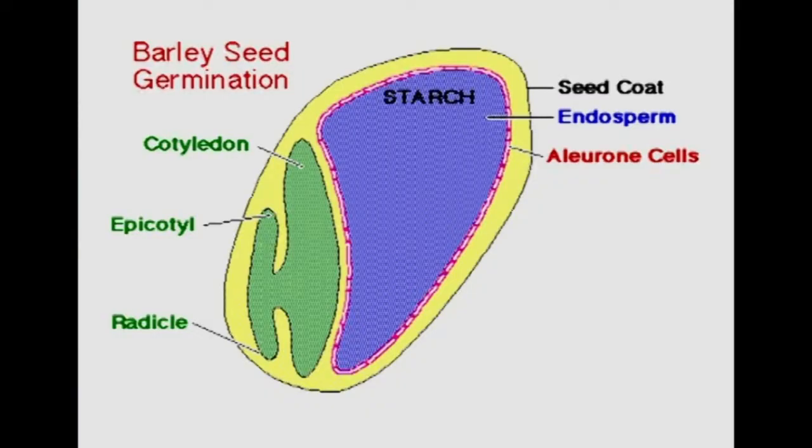The protein content of cereals varies within the cereal grain components also. For example, more protein is found in the bran, the aleurone and the germ layers, and also the scutellum, when compared with the endosperm and the testa. Within the endosperm also, the concentration of protein increases from the centre towards the periphery.